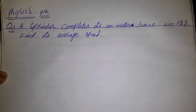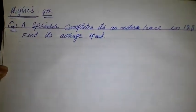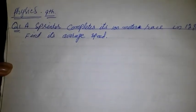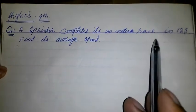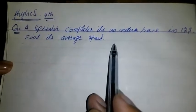Today we are going to solve a word problem from physics 9th class in our textbook. A sprinter completes its 100 meter race in 12 seconds. Find its average speed.